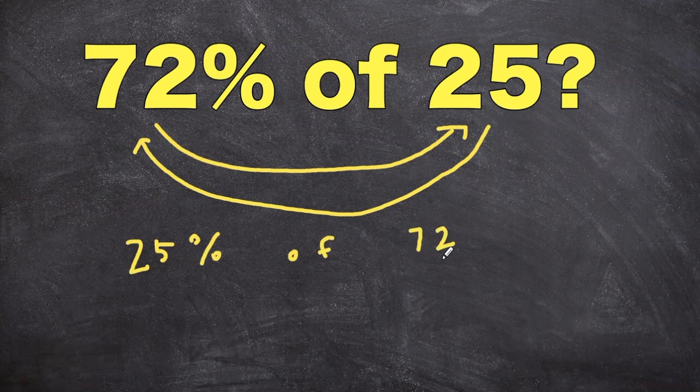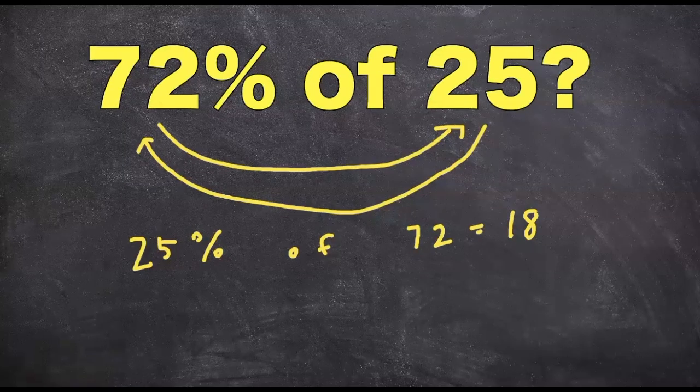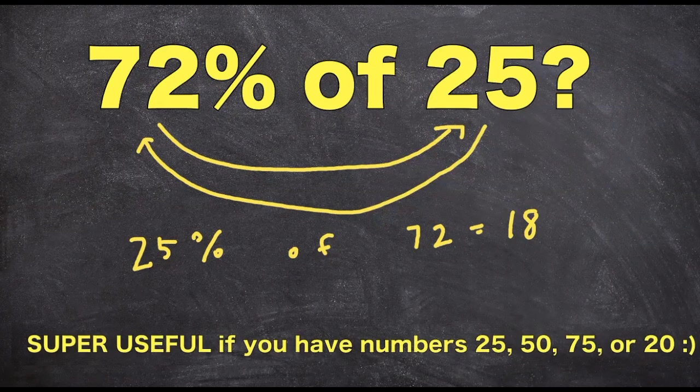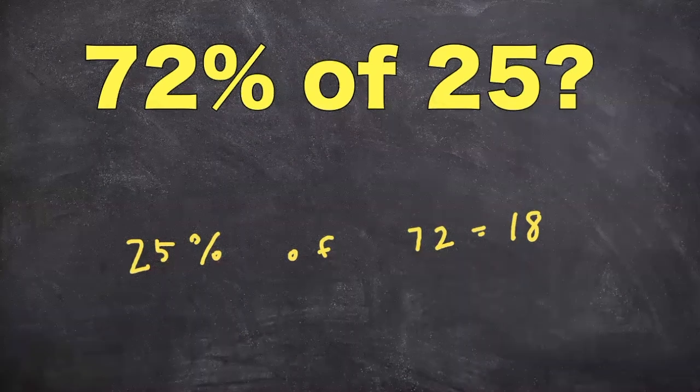So in this case, 25% of 72 is just breaking down 72 into four equal parts, so we know that the answer is equal to 18. Now this wouldn't work for all problems, but if you have numbers involving like 25, 50, 75, or even 20, this trick is super useful. Now why does this work?